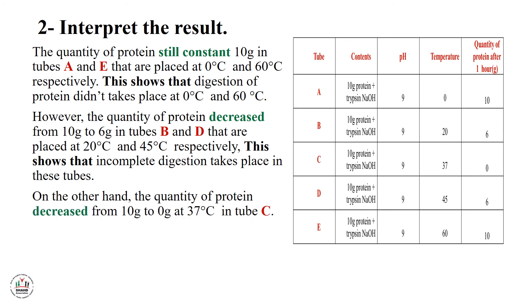On other hand, the quantity of protein decreased from 10 grams to zero grams at 37 degree in tube C. This shows that complete digestion takes place at 37 degree.